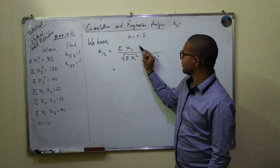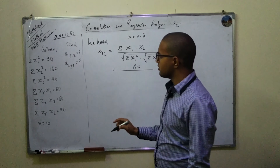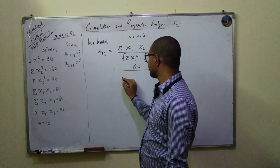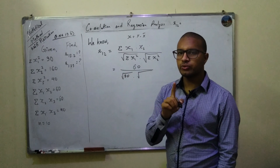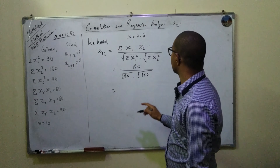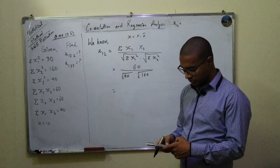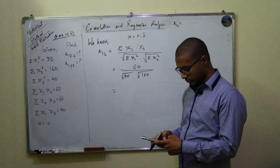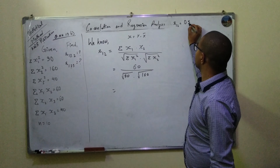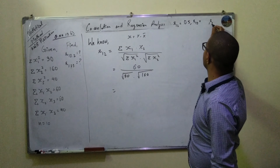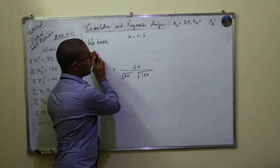So what we've been given: the summation x1·x2 is 60, summation x1 squared is 90, and summation x2 squared is 162. So r12 = 60 divided by square root of 90 times 162, which gives us approximately 0.5.